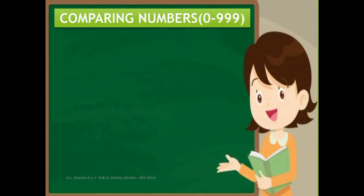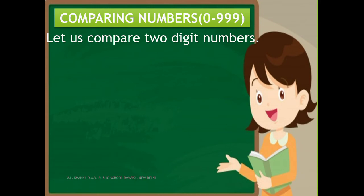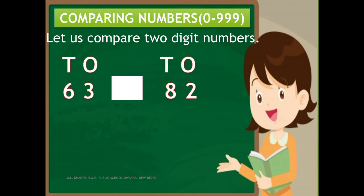Let us see examples of comparing two-digit numbers. There are two numbers: 63 and 82. While comparing these numbers, first we compare the digits at the tens place. In 63, 6 is at the tens place, and in 82, 8 is at the tens place. So we compare 6 tens and 8 tens.